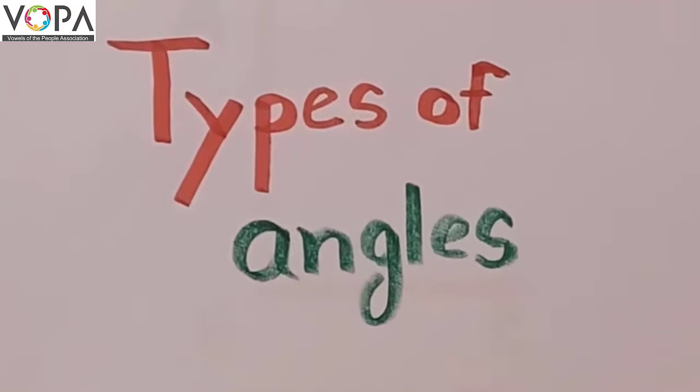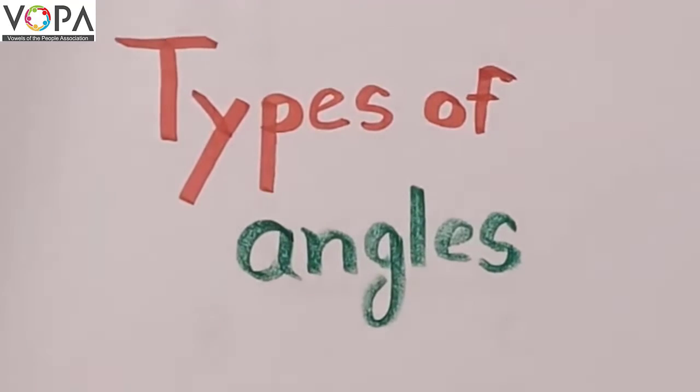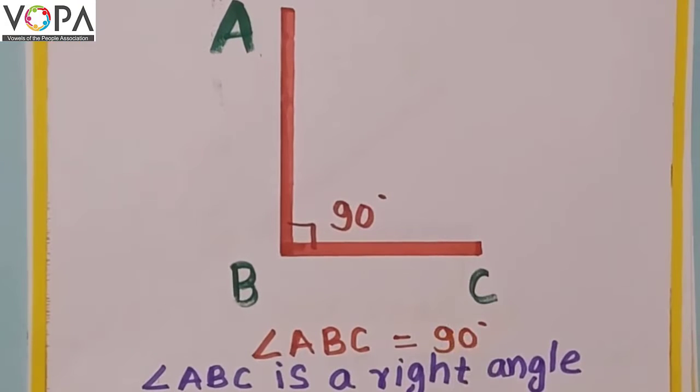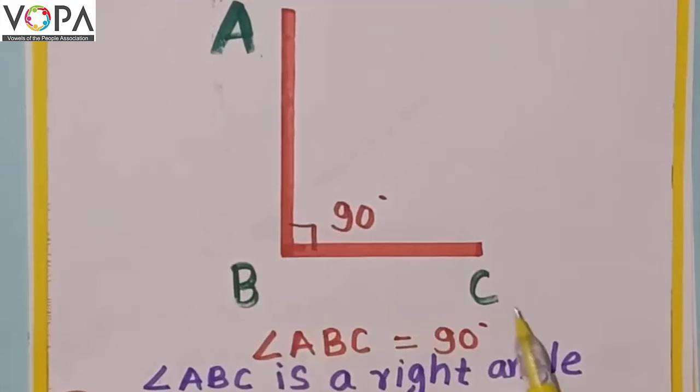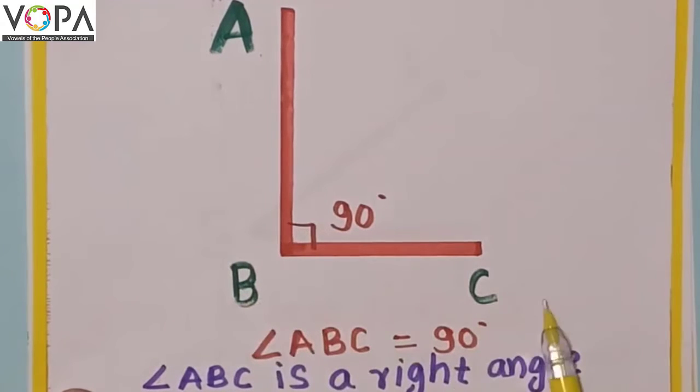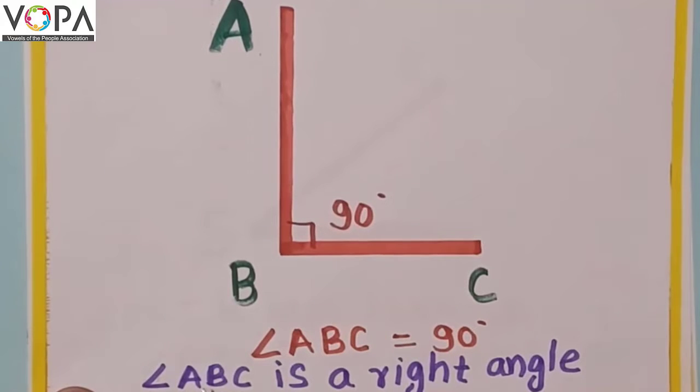Hello friends, today we are going to learn types of angles. Now I am going to show you an angle. Look at this angle: angle ABC. Read with me, angle ABC measures 90 degrees.